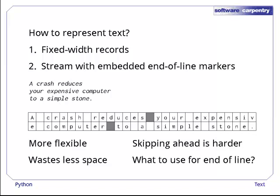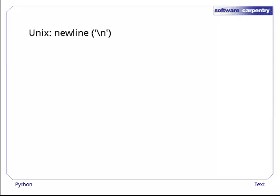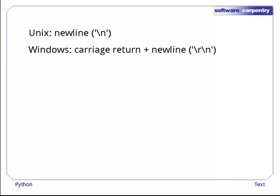Unfortunately, different groups picked different things. On Unix, the end of line is marked by a single newline character, written as backslash-n. On Windows, the end of line is marked with a carriage return followed by a newline, written as backslash-r backslash-n. Most editors can detect and handle the difference, but it's still annoying for programmers who need to be able to handle both.